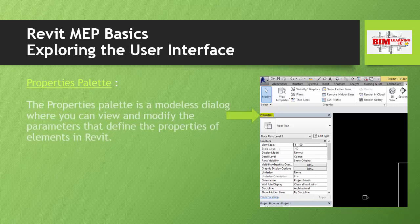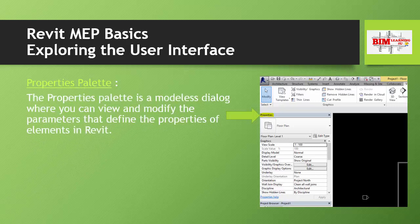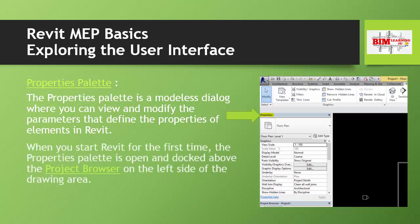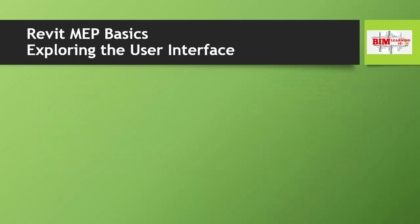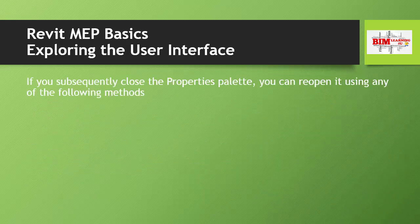The Properties Palette is a modeless dialog where you can view and modify the parameters that define the properties of elements in Revit. When you start Revit for the first time, the Properties Palette is open and docked above the Project Browser on the left side of the drawing area.